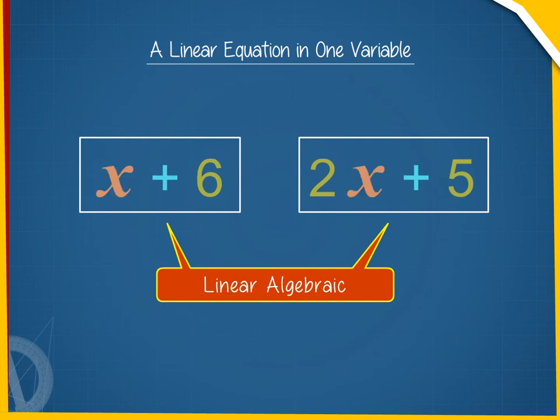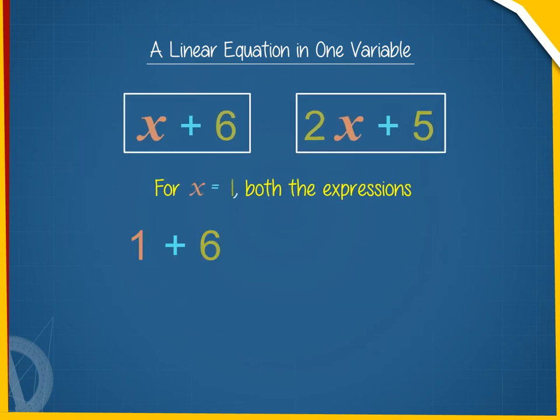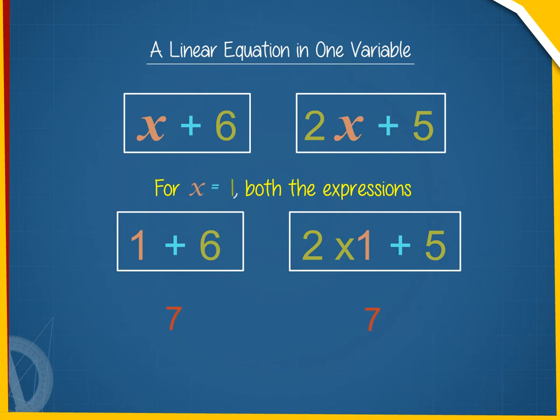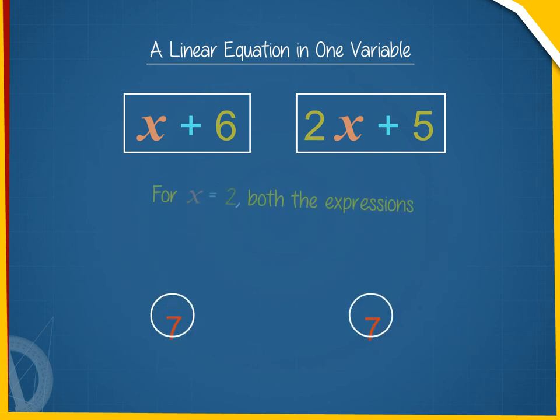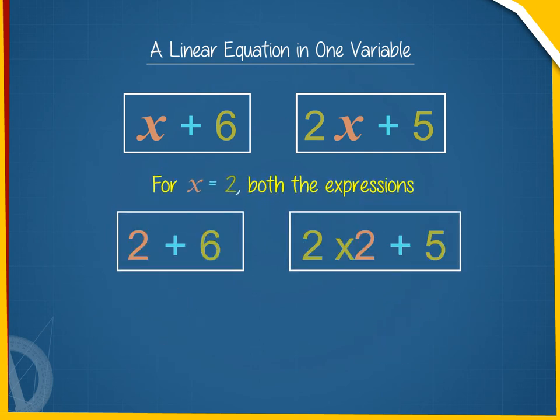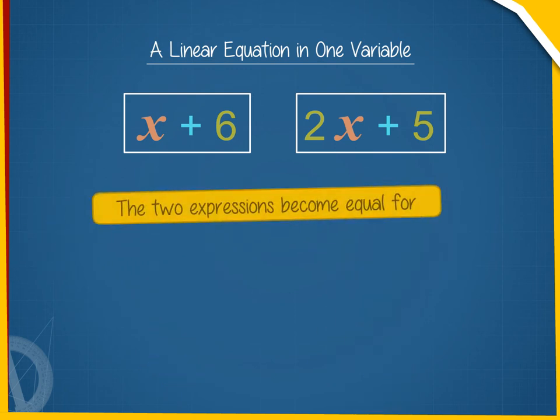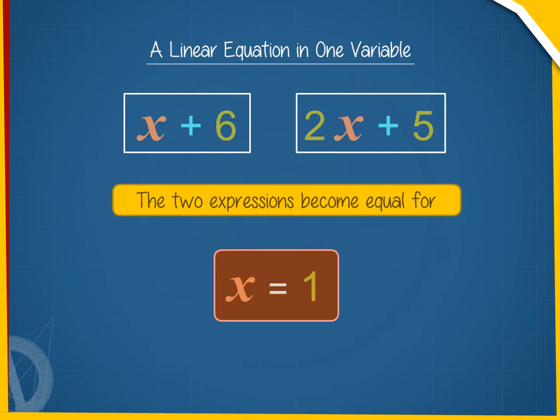By giving different values of x, we can find the values of the two expressions separately. For x equals 1, both expressions have the same value, that is 7. For x equals 2, they have values 8 and 9 respectively. Thus, the two expressions become equal for x equals 1.